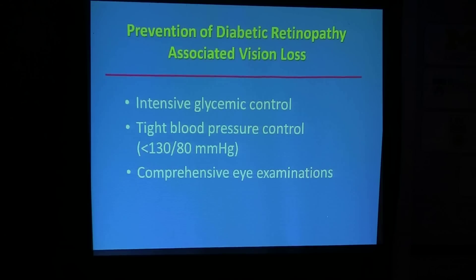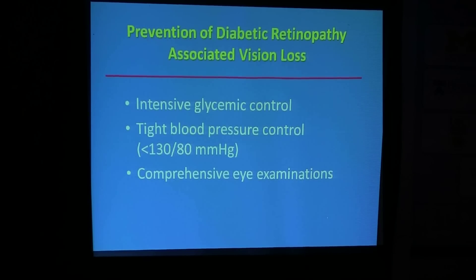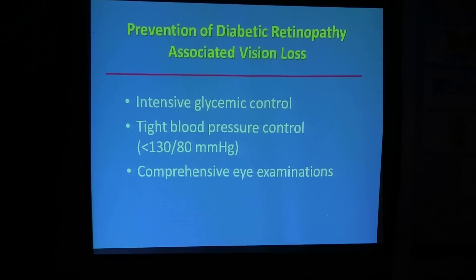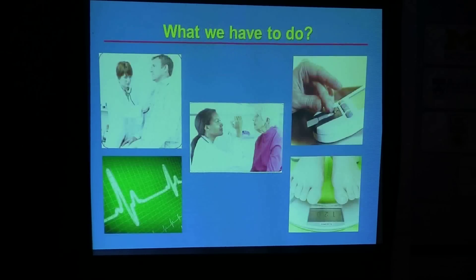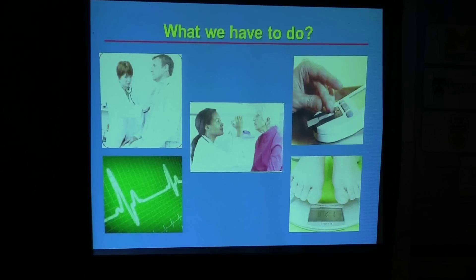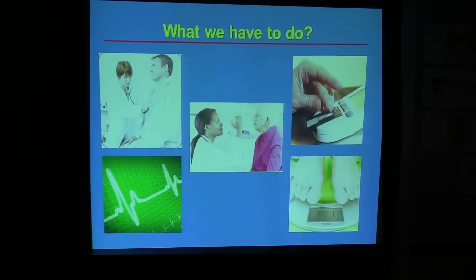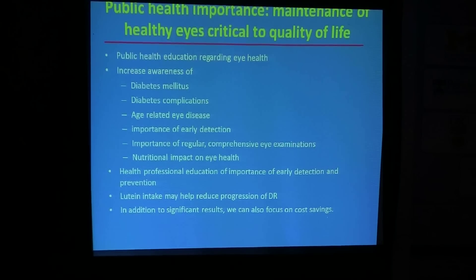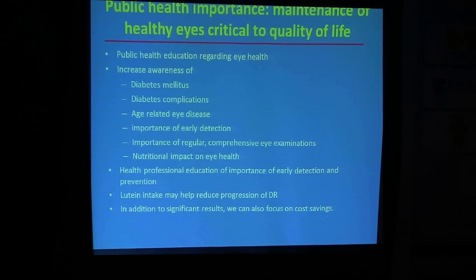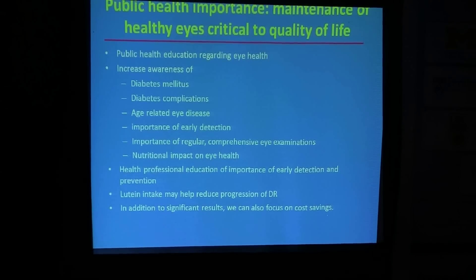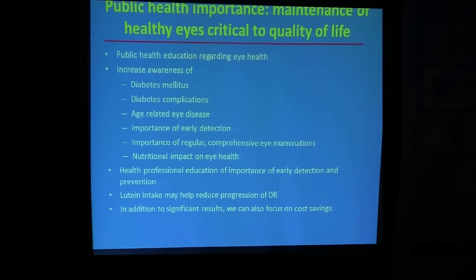Based on our data, as a nutritionist the general recommendations are: maintain glycemic control, since diabetes induces retinal degeneration — intensive glycemic control can protect the eyes. Also maintain tight blood pressure control and have comprehensive eye examinations frequently. From a public health perspective, we need regular doctor visits, retinal eye examinations, body weight maintenance, and blood glucose monitoring. Public health education is very important for diabetic patients, as this is a progressive disorder and they may become depressed thinking there is no treatment, even when under glycemic control. Increasing disease awareness is critical.